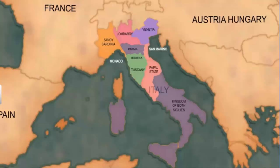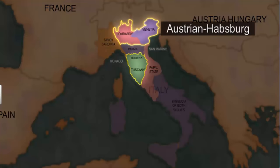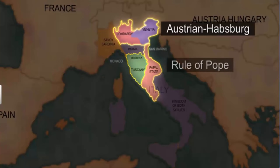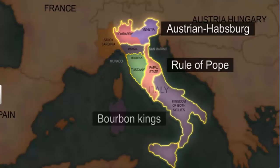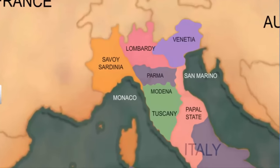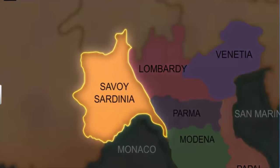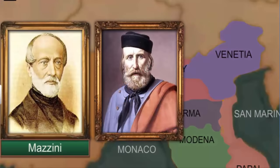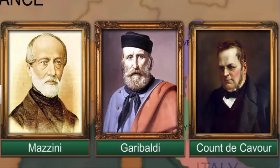Italy had a long history of political fragmentation too. During the middle of the 19th century, Italy was divided into seven states. Northern Italy was ruled by the Austrian part of the Habsburg Empire. Central Italy was ruled by the Pope, while the southern part and Parma came under the Bourbon kings of Spain. Only one state, Sardinia-Piedmont, was ruled by an Italian princely house. There were a few key people who shaped the revolution and unification in Italy.